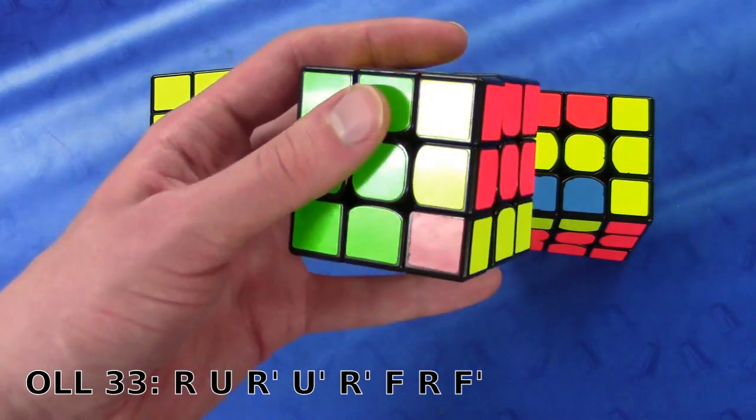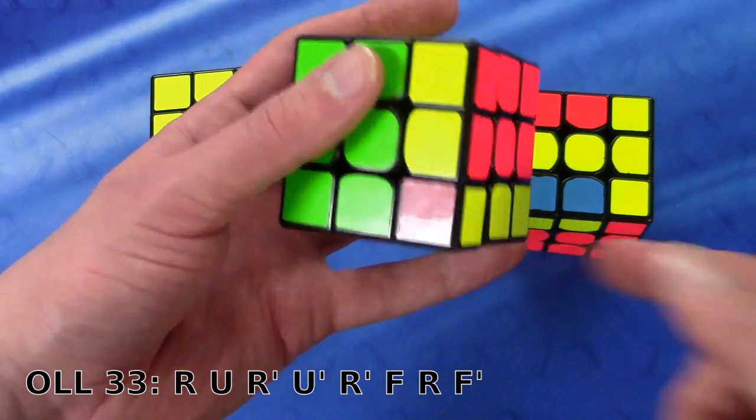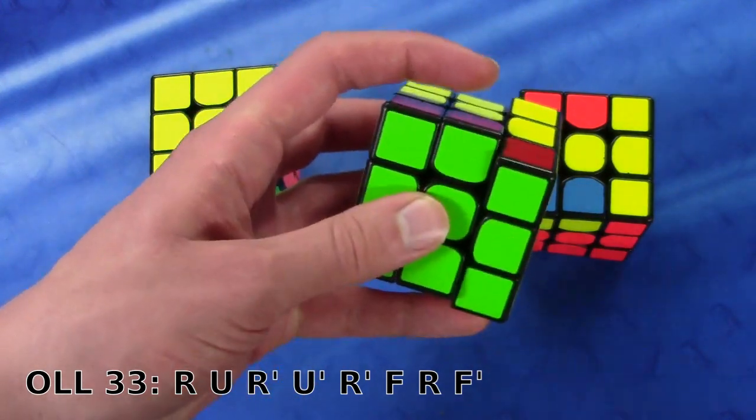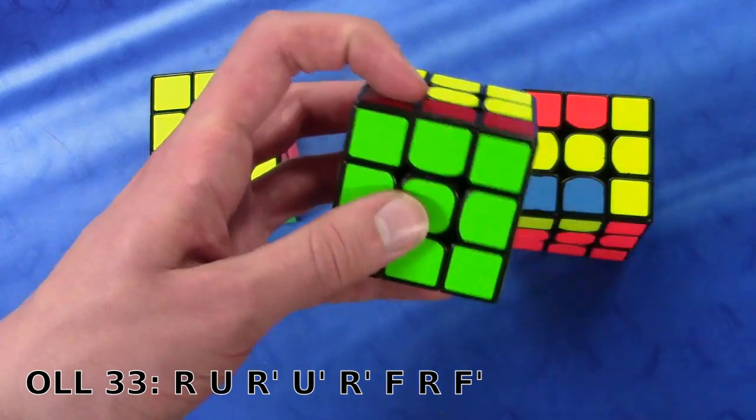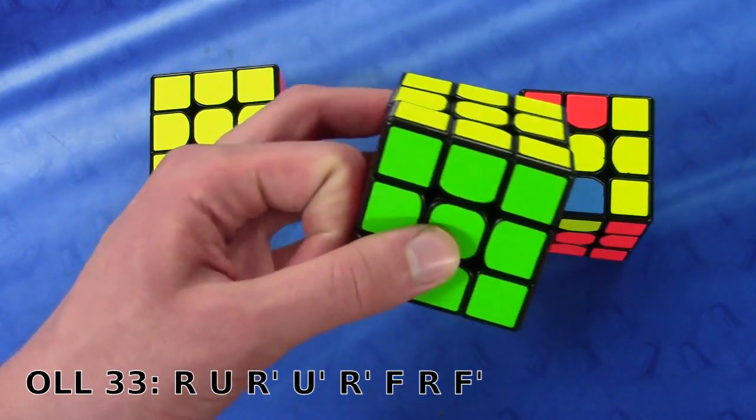Now you're going to have to reposition your hand slightly so that you can extend your pinky and do this R move. And now since my index is right here, I'm going to use it instead of my thumb to do the F' just like this.